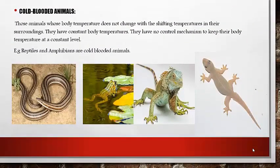Second, we have cold-blooded animals. Those animals whose body temperature changes with the shifting temperature in their surroundings are called cold-blooded animals. They do not have a control mechanism to keep their body temperature at a constant level. Examples of cold-blooded animals are reptiles and amphibians, such as snakes, frogs, and lizards. These are all cold-blooded animals.